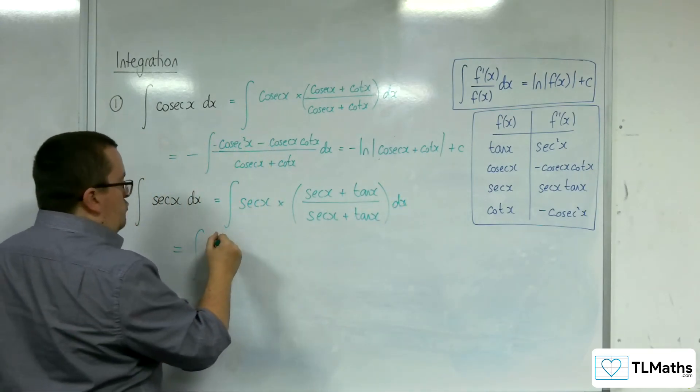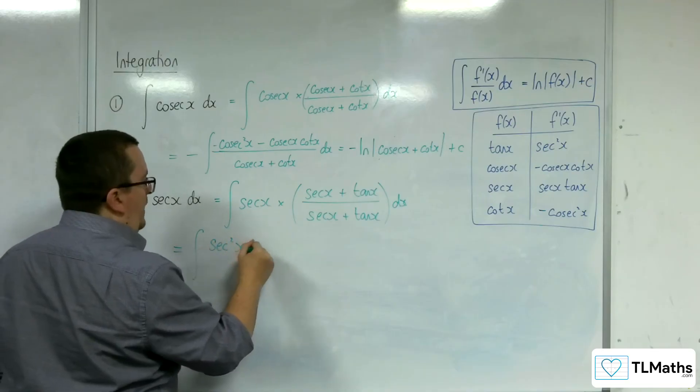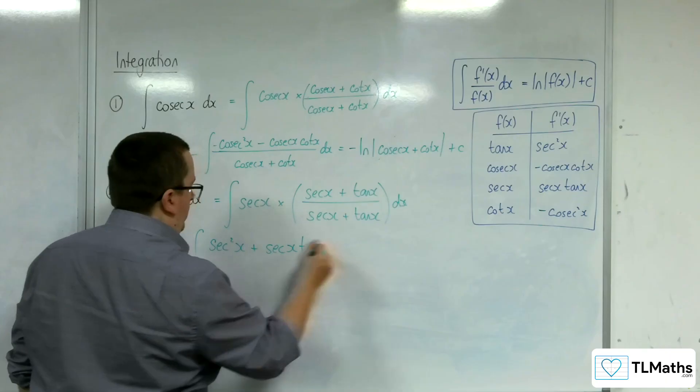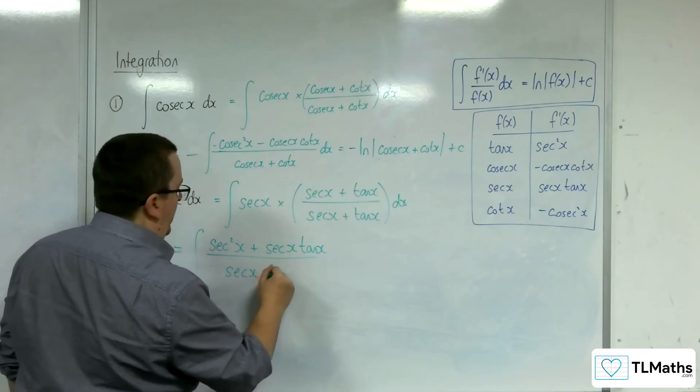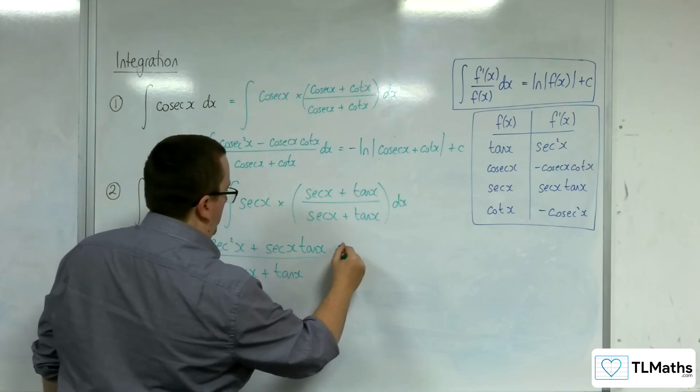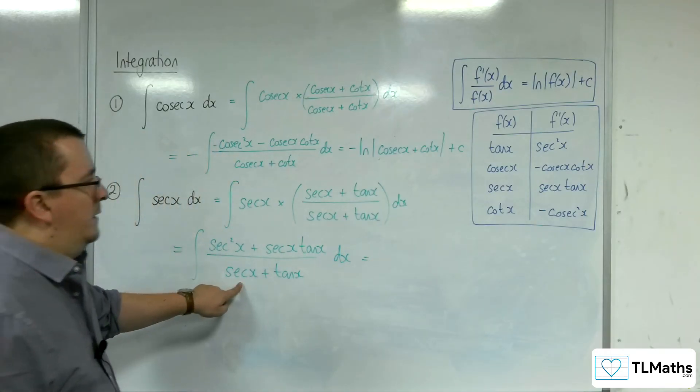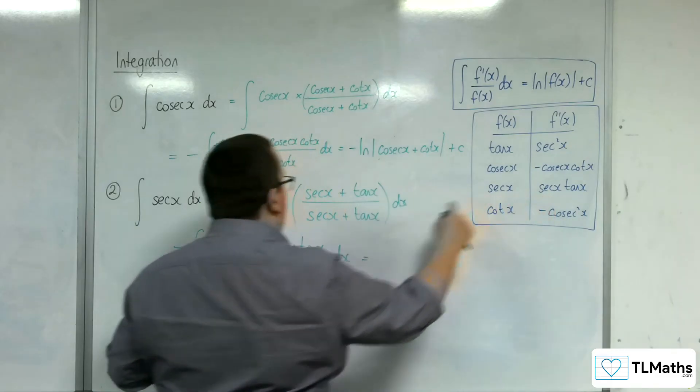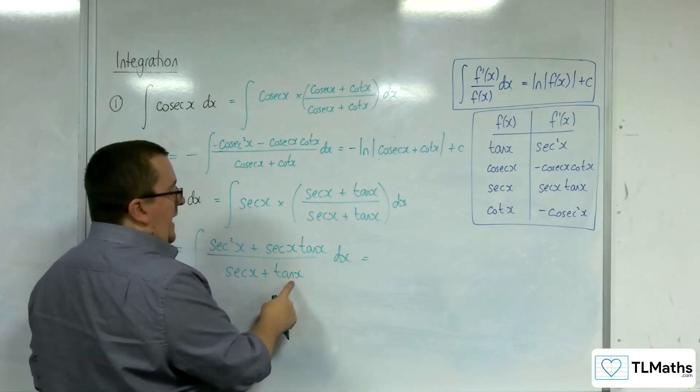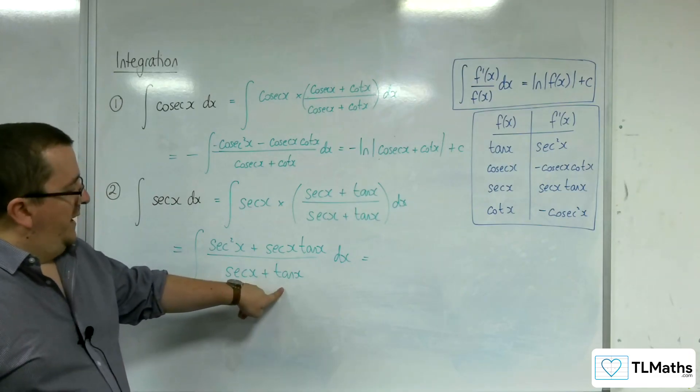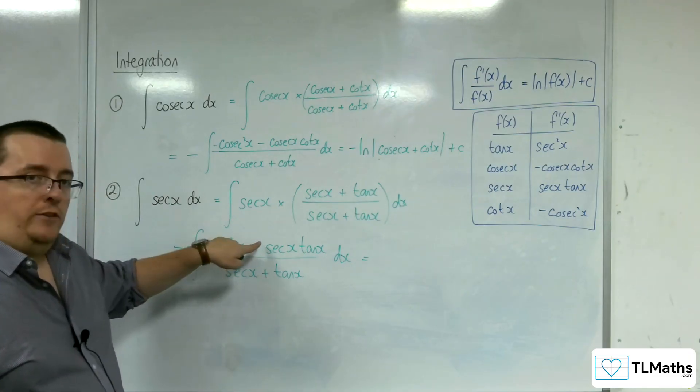So, in the numerator, we've got sec squared x plus sec x tan x. In the denominator, we've got sec x plus tan x. Now, sec differentiates to sec x tan x, which is there. And tan differentiates to sec squared, which is there. So the denominator perfectly differentiates to the numerator.